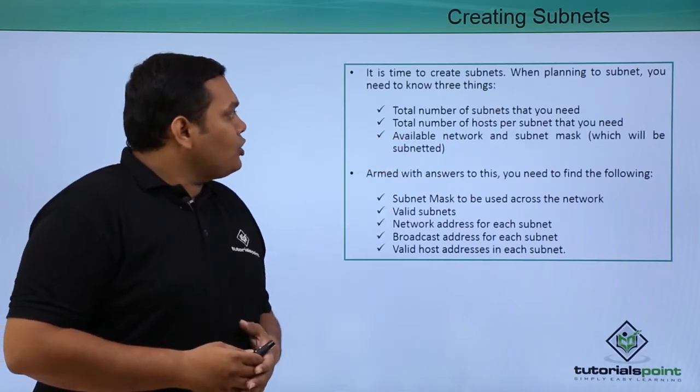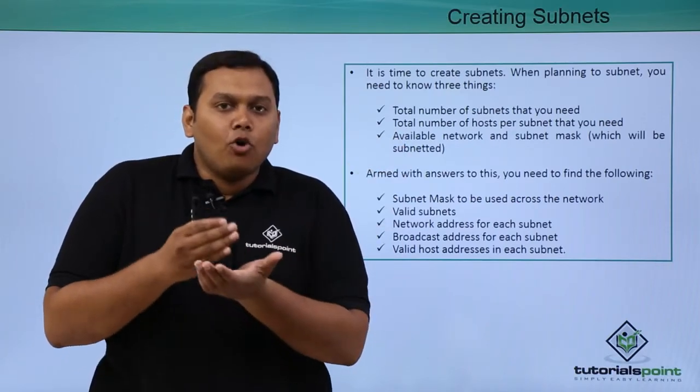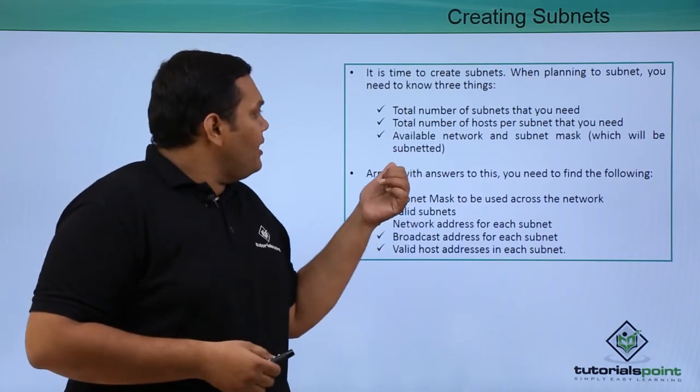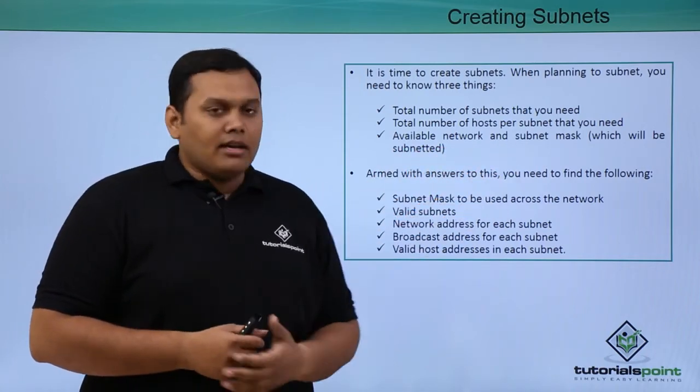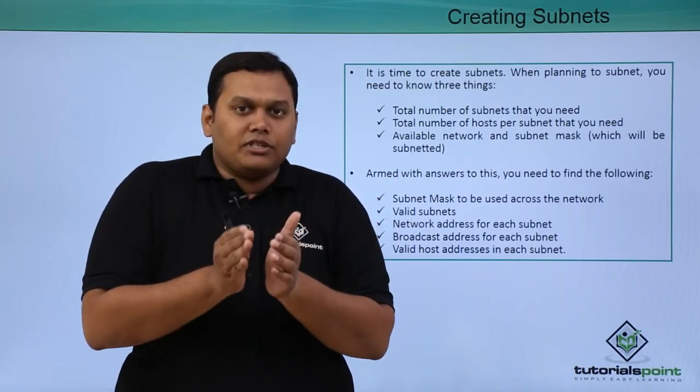The three things would be: total number of subnets that we need, total number of hosts per subnet we need, and available network and subnet mask which will be subnetted in the future. So we need all these three things with us.